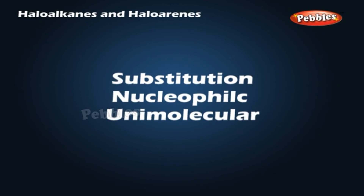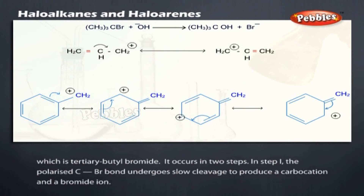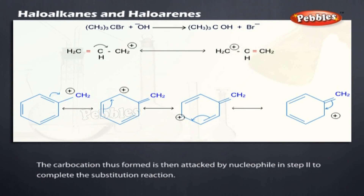SN1 — Substitution Nucleophilic Unimolecular: the reaction between tertiary butyl bromide and hydroxide ion yields tertiary butyl alcohol and follows first-order kinetics; that is, the rate depends only on the concentration of tertiary butyl bromide. It occurs in two steps: in step 1, the polarized C–Br bond undergoes slow cleavage to produce a carbocation and a bromide ion. The carbocation is then attacked by the nucleophile in step 2 to complete the substitution.